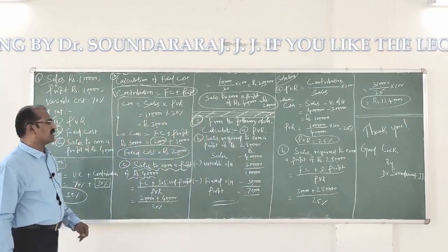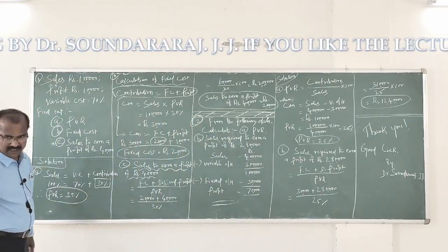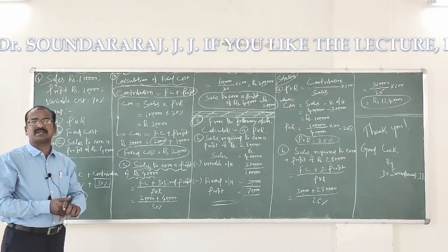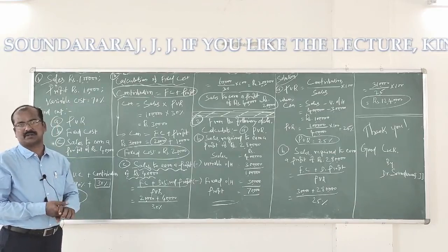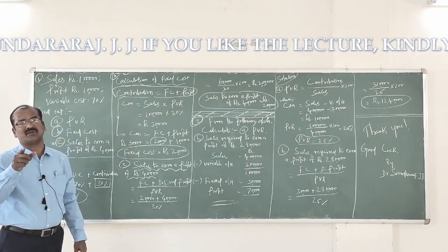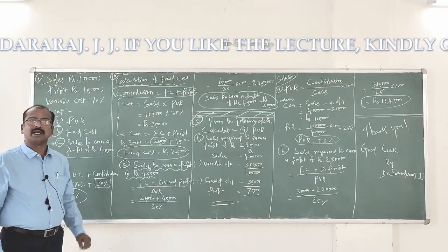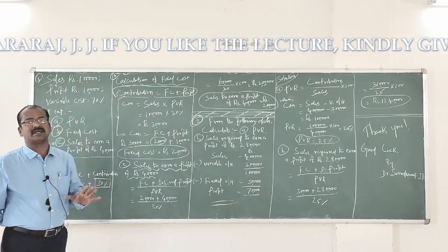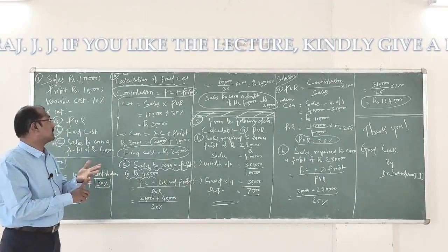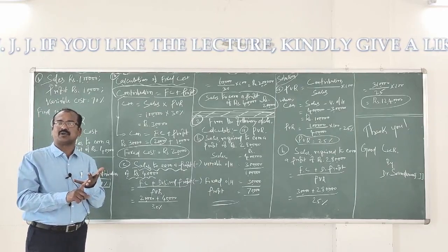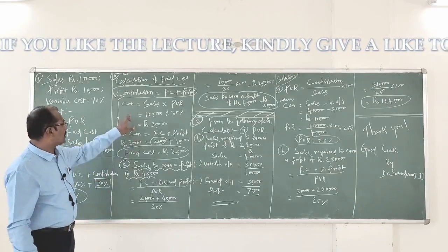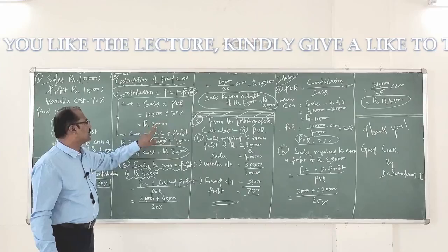Now let us calculate fixed cost, which is the requirement for question B. The equation is: contribution equals fixed cost plus profit. Now, to calculate contribution, there is a popular formula in marginal costing — sales multiplied by PVR. Sales is 1 lakh rupees and PVR is 30%, therefore contribution equals 1 lakh into 30%, which comes to 30,000 rupees.